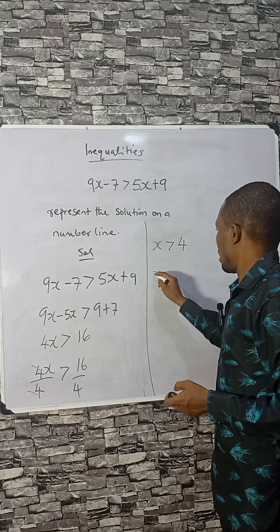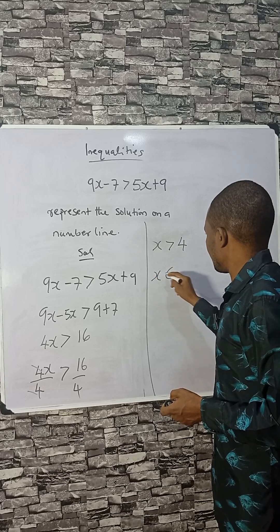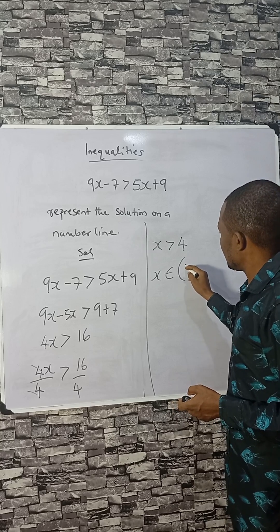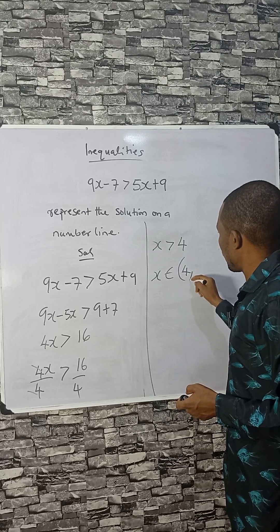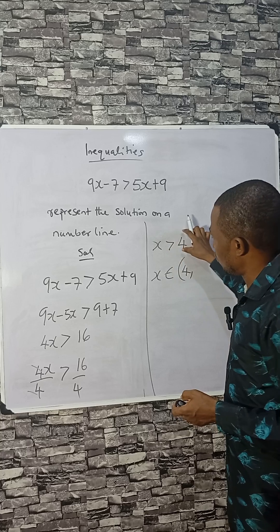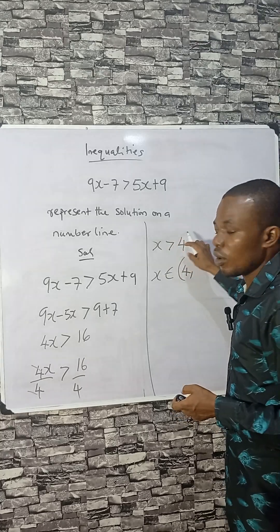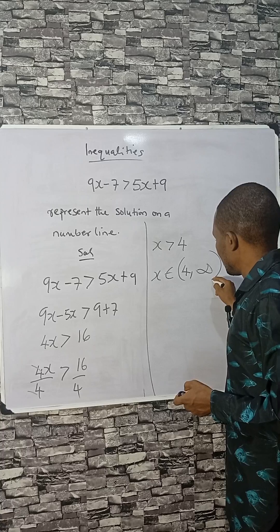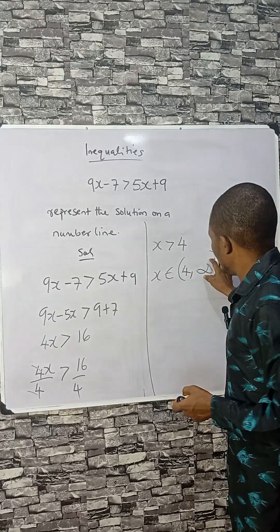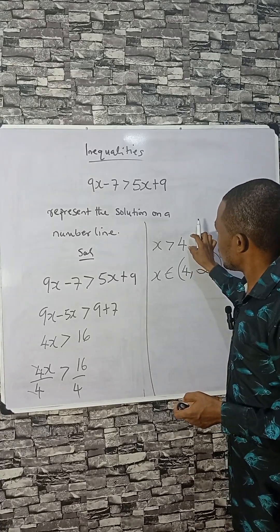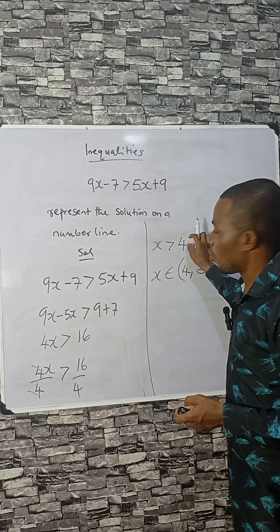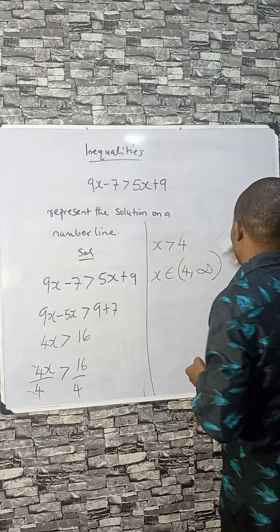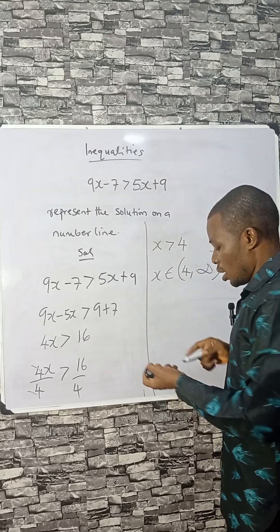Now x is greater than 4. I'll represent this as a set. Since x is greater than 4, that means values greater than 4 and up to positive infinity are members of this set, so 4 is excluded and positive infinity is there — from 4.1, every value after 4 to positive infinity.